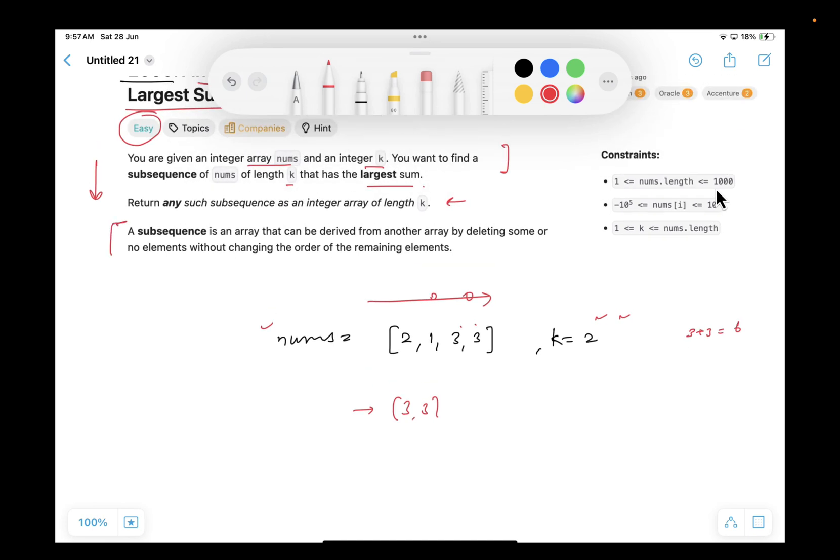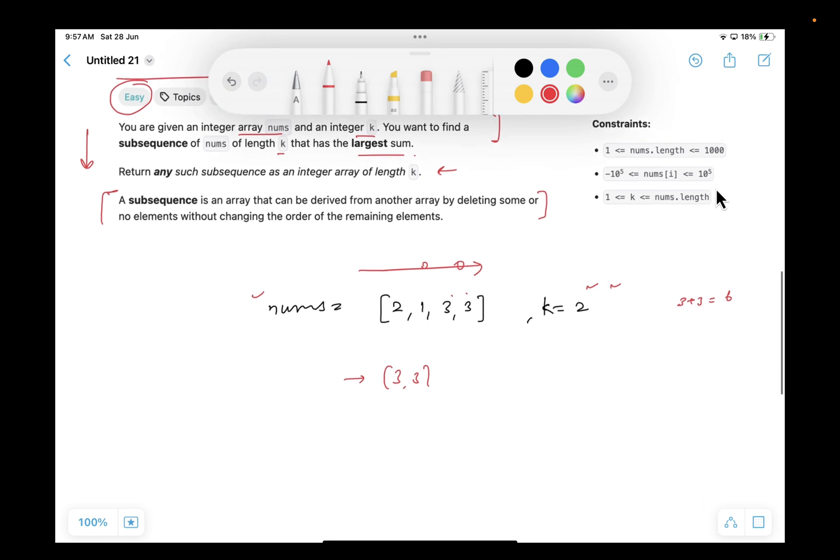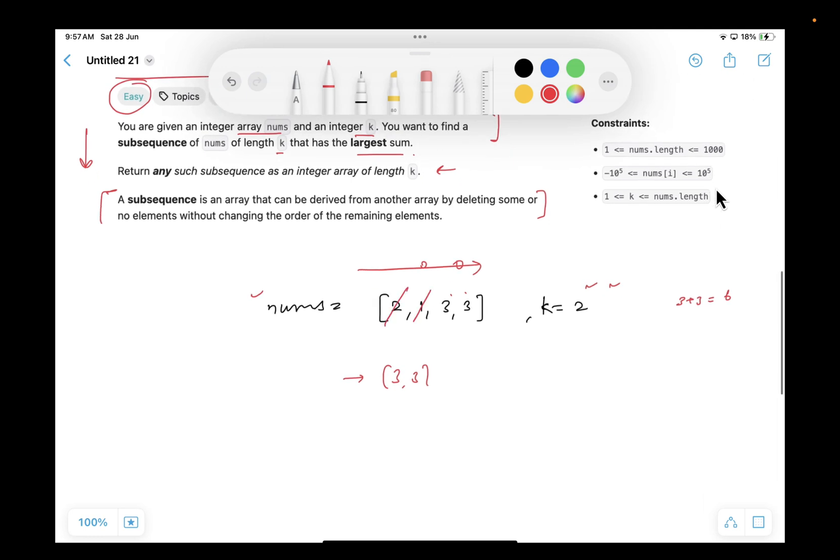This is just definition of subsequence. From an array, if I delete some items, let's say these two items I deleted, the remaining part becomes a subsequence. Or in other terms, when we are going from left to right and we are picking up some items. Let's say I pick this, and I'm not picking this, picking this, not picking this. So all of those picked up items form a subsequence.